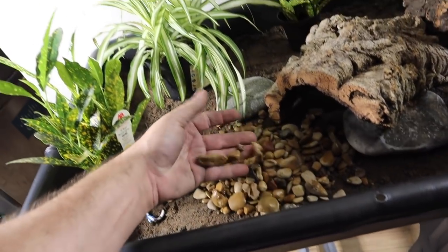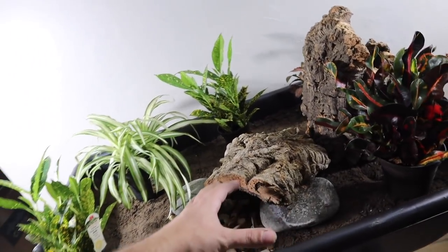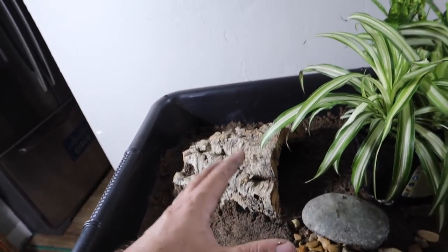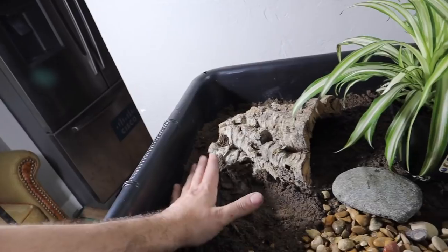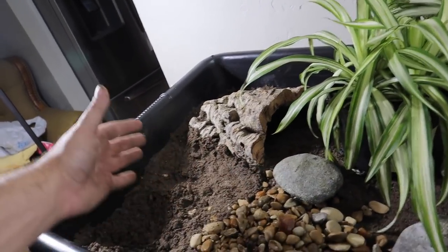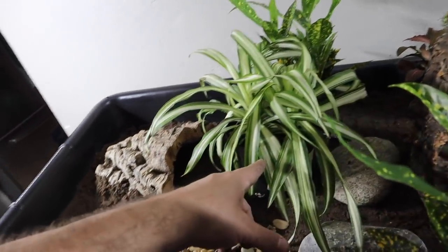We have some small rock, some cork rounds, and some stones and things like that. Let's go ahead and get this thing put together. We went ahead and put in the first turtle hide, which is this half cork round here which will allow the turtle to get up underneath there, burrow in there and hide if it would like to. We're going to go ahead and plant something - I think what I'm going to plant here is a part of this spider plant.